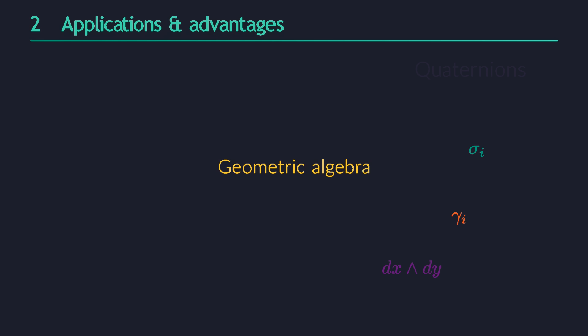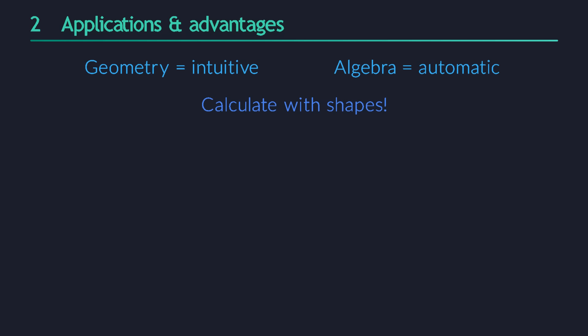Geometric algebra has many advantages when compared to the alternatives. It combines geometry, which is more intuitive and more visual, with algebra, which is more automatic. The calculations can be performed by a computer, and they always give the correct answers.